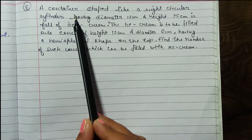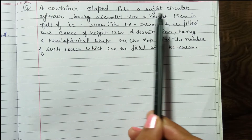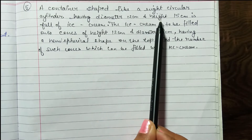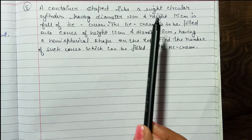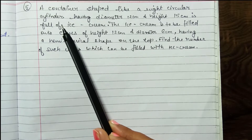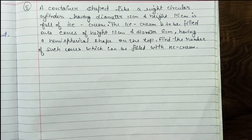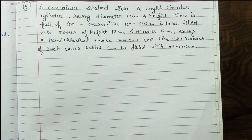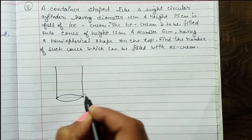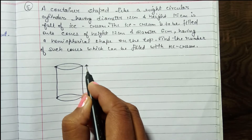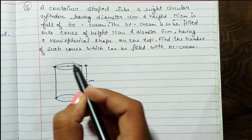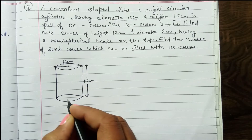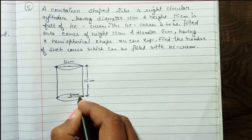We have a statement: a container shaped like a right circular cylinder having diameter 12 cm and height 15 cm is full of ice cream. This cylinder has a 90-degree angle — it is the standard cylinder we discuss in our chapter. The height is 15 cm, the diameter is 12 cm, and therefore the radius is 6 cm.